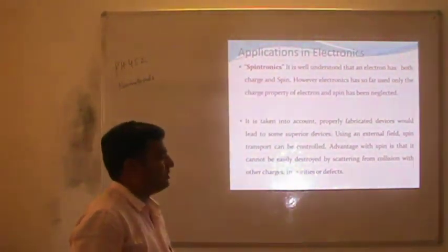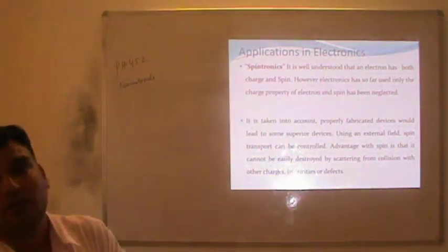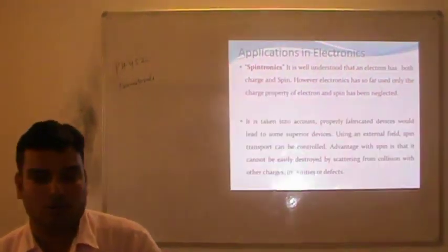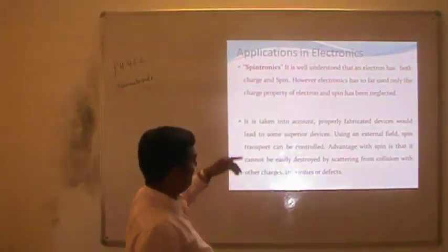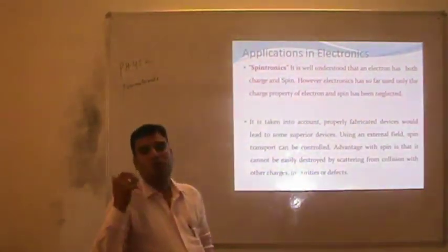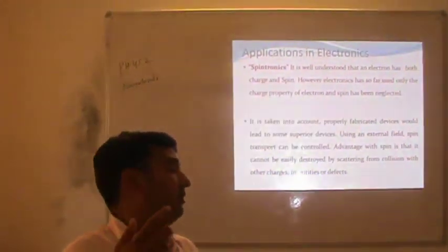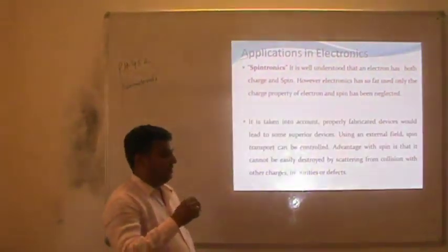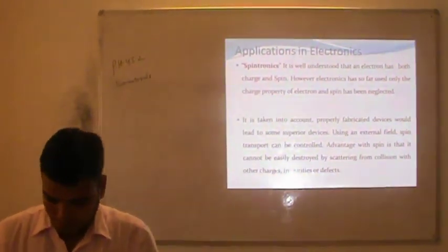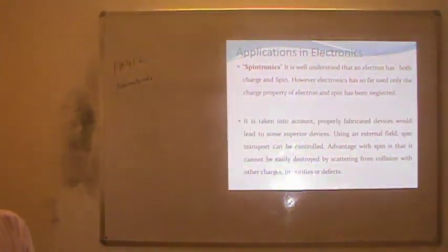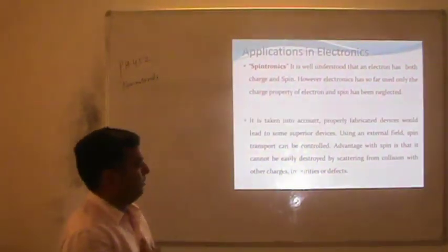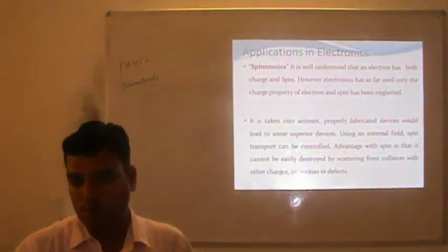It is well understood that an electron has both charge and spin. However, so far only the charge property of the electron has been exploited, and spin has been neglected. Nowadays, we are looking for properties based on the spin of the electron. The properties based on spin are superior to properties based on charge, and it is very easy to control spin-based properties, which may not be destroyed by scattering from collisions with other elements or charges. Properly fabricated devices would lead to superior devices controllable using an external field.